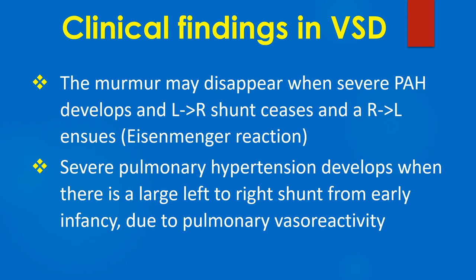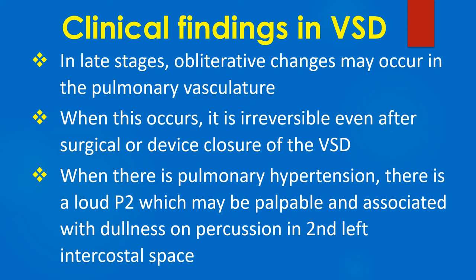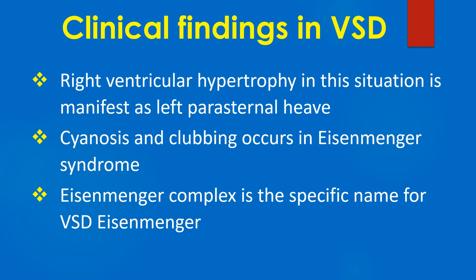Severe pulmonary hypertension develops when there is a large left-to-right shunt from early infancy due to pulmonary vasoreactivity. In late stages, obliterative changes may occur in the pulmonary vasculature, and when this occurs, it is irreversible even after surgical or device closure of the VSD. When there is pulmonary hypertension, there is a loud pulmonary component of the second heart sound, which may be palpable, associated with dullness on percussion in the second left intercostal space. Right ventricular hypertrophy is manifest as left parasternal heave.